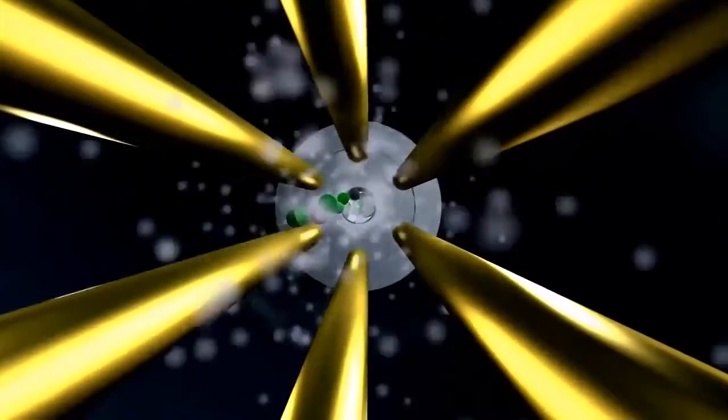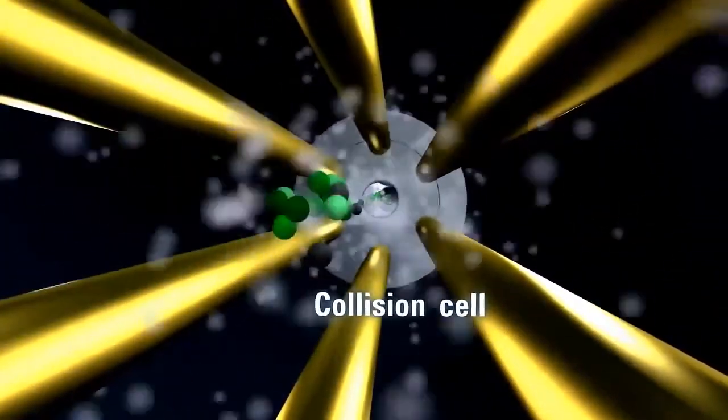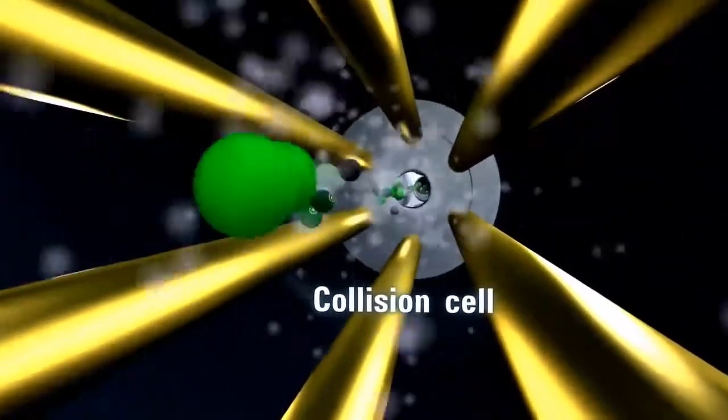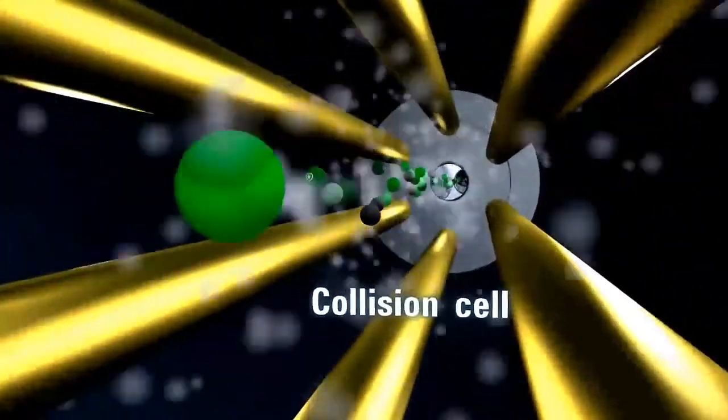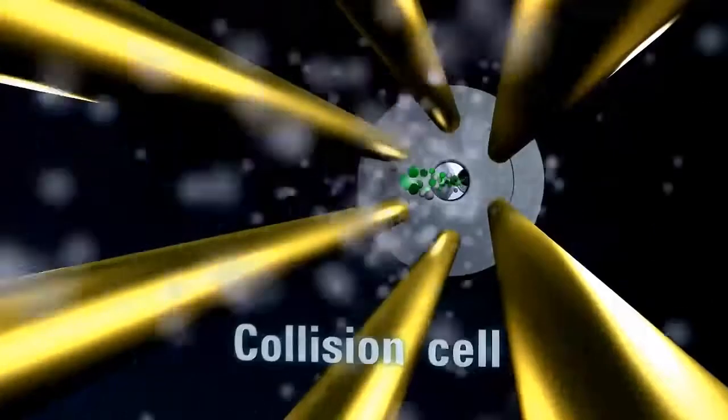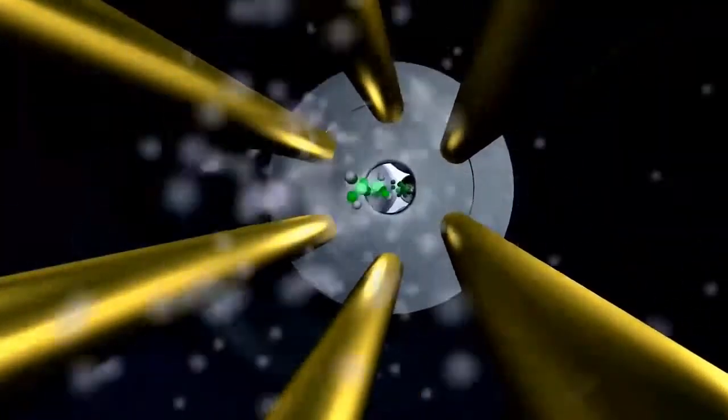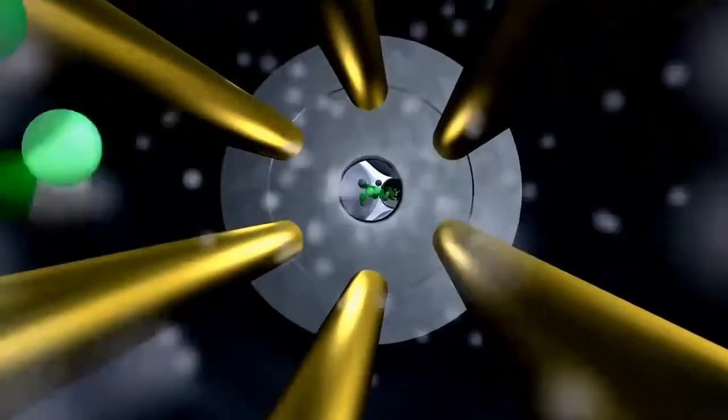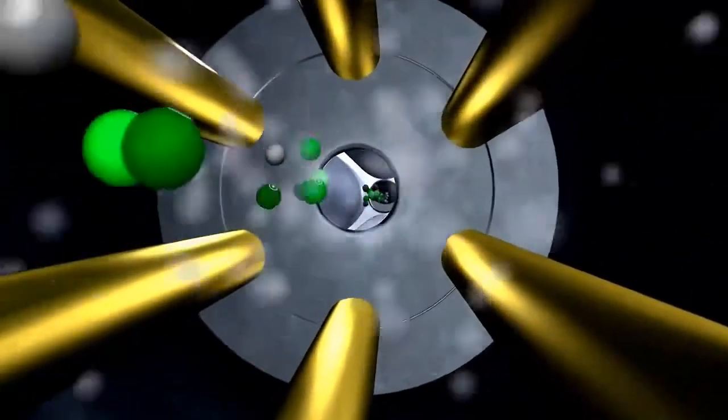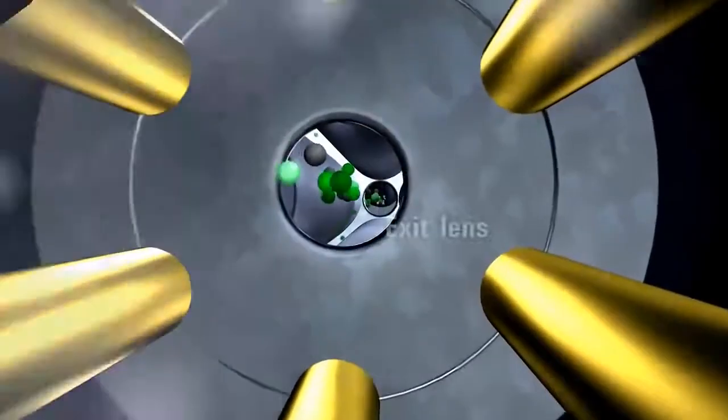In the hexapole collision cell, precursor ions strike collision gas molecules, generating product ions and neutral fragments. Linear axial acceleration and high-collision gas pressure simplify operation and ensure fast, sensitive MS-MS without cross-experiment memory effects.